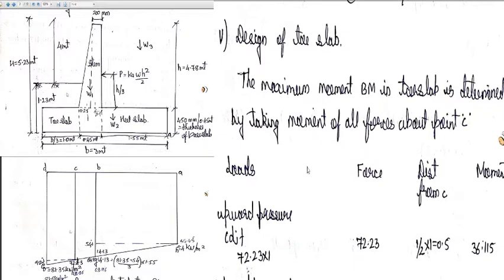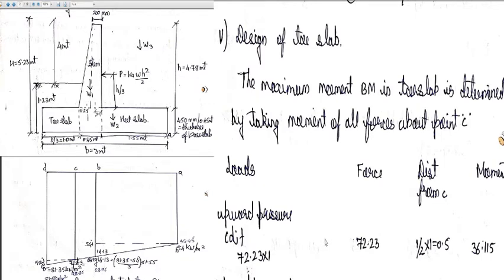Now we shall design the toe slab. The toe slab is a rectangular section of 450 mm depth by 1 meter length. Forces acting on it include its self-weight and earth fill at a height of 1.23 m above the base of the slab. The maximum bending moment in the toe slab is determined by taking the moment of all forces about point C, which is the junction of the stem and toe slab. The upward pressure distribution from C to D is again trapezoidal.